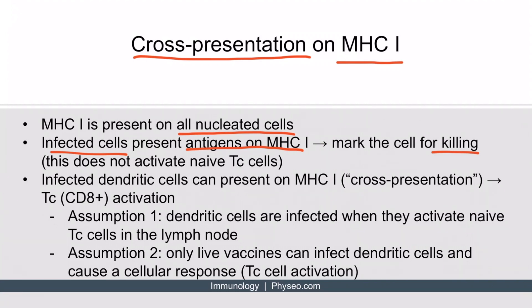However, this interaction does not activate naive cytotoxic T cells. This brings us to why dendritic cells are so important. If the infection includes dendritic cells, those dendritic cells can present on MHC class 1 — this is called cross-presentation — and dendritic cells can do something no other cells can do: cause cytotoxic T cell activation.